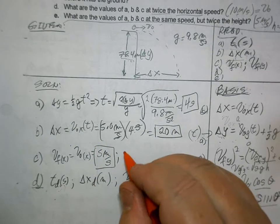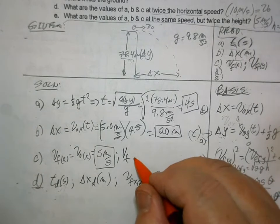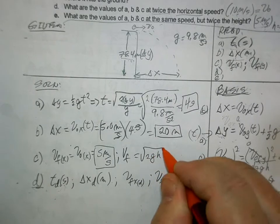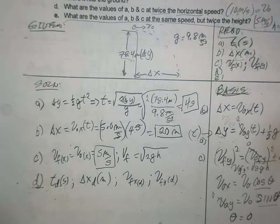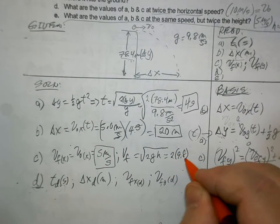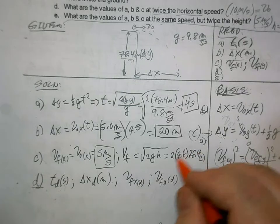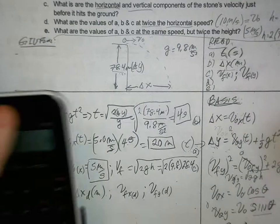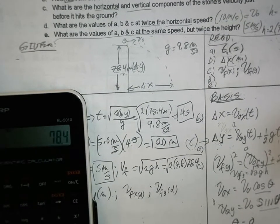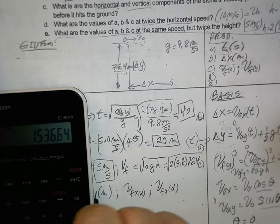And the second one, v f. You take the square root of this. This is zero, so it's the square root of 2 g h, which is 2 times 9.8 times 78.4. Take the square root of that.